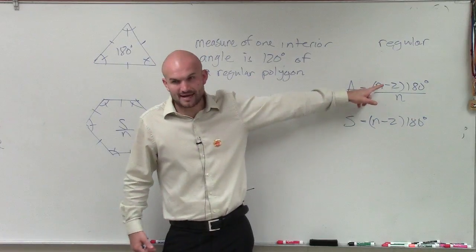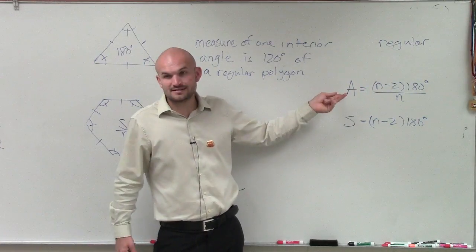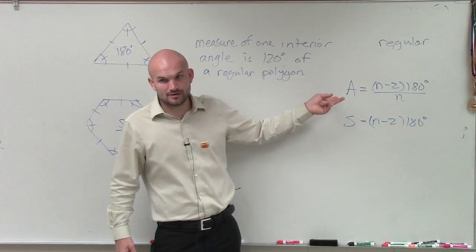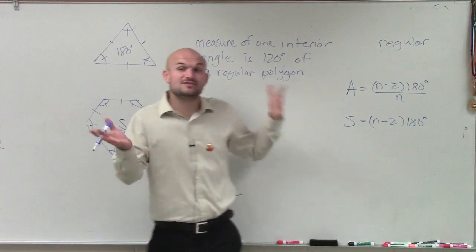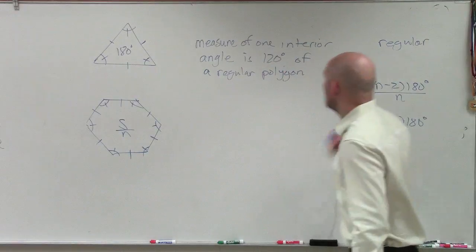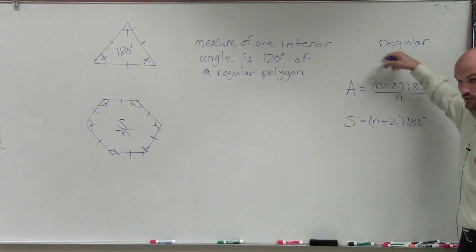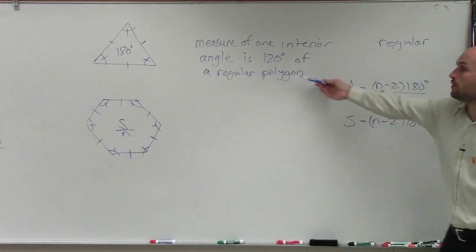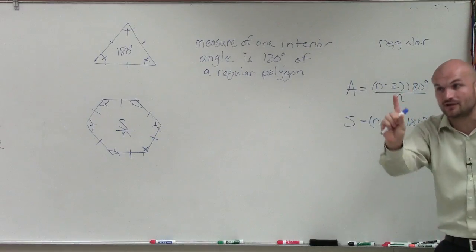What about this? Do we know what n is? Do we know what a is, the measure of one interior angle? Which was that? So 120. So since we at least know some information, I'm actually going to want to choose this formula over that one, because we don't know what the sum is. We only know what one interior angle is.